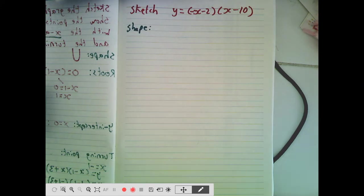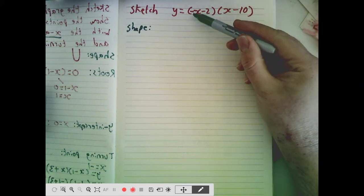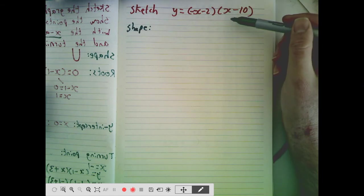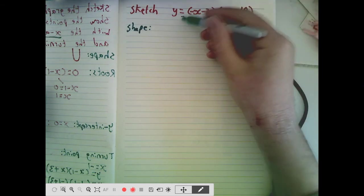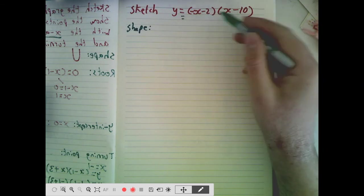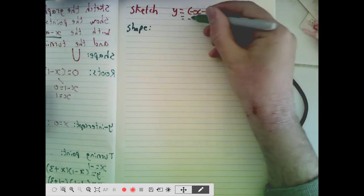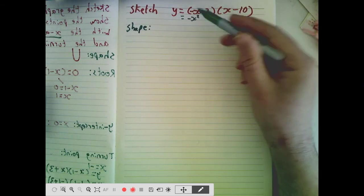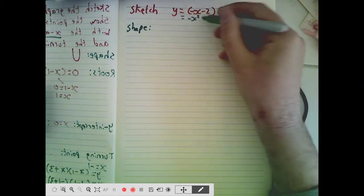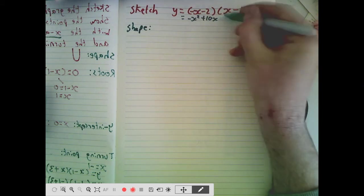So let's think, what do we have? We've got a negative x and we've got an x. So if we were to expand these brackets, minus x times x would be minus x squared. Now that is the only x squared term that we will get when we expand these brackets. We could go further, minus x times 10 would be positive 10x, take 2x, plus 20.